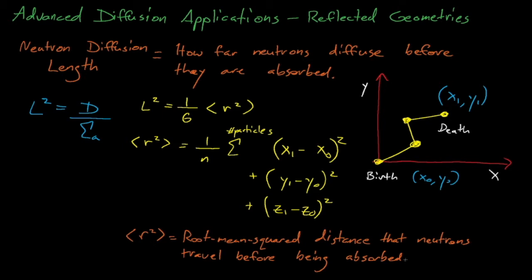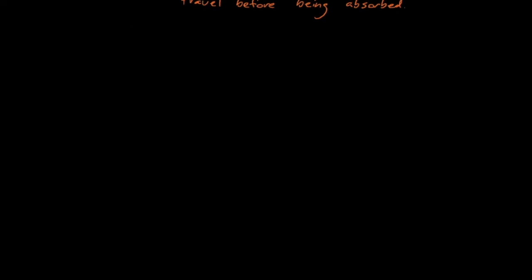Later on, when we discuss neutron slowing down theory, the Fermi age, or tau, is analogous to the neutron diffusion length, except that it represents the crow's flight distance that neutrons travel before they slow down to some specific energy.